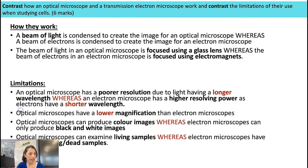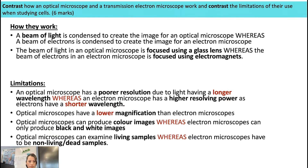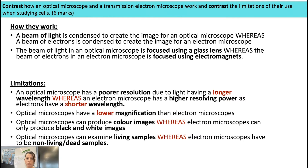Moving on to the limitations: an optical microscope has a poorer resolution due to light having a longer wavelength, whereas an electron microscope has a higher resolving power as electrons have a shorter wavelength. Optical microscopes have a lower magnification — because we've said 'lower', that is already comparative, so you don't have to add 'whereas electron has higher'. Optical microscopes can produce colour images, whereas electron microscopes only produce black and white images. And finally, optical microscopes can examine living samples, whereas with electron microscopes, because it has to be in a vacuum, you can only examine non-living or dead samples.